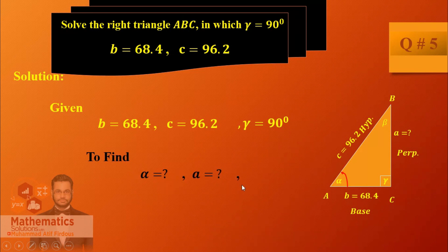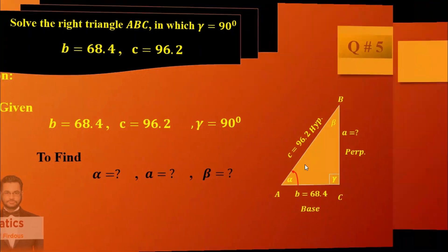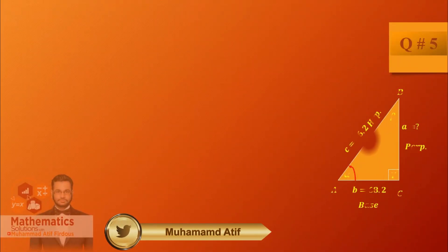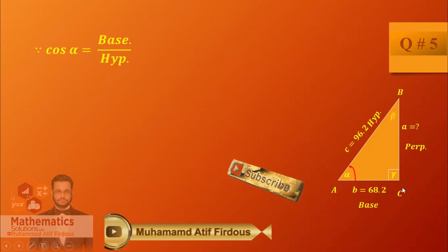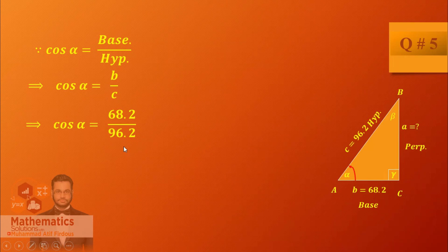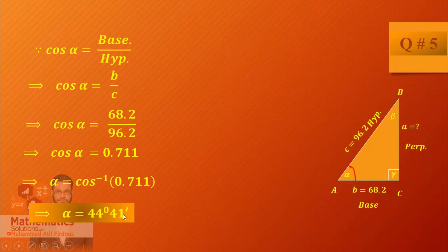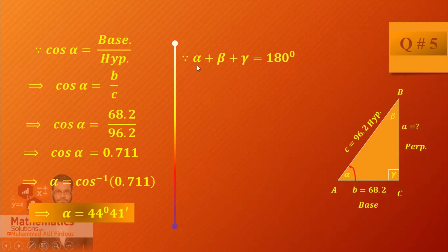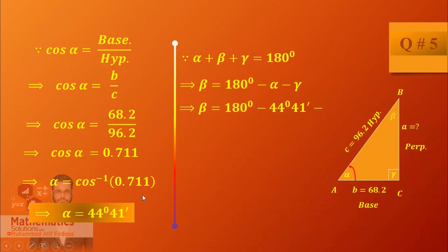We can find beta. We have alpha, A, and B. Now for the last question: use cosine which equals base over hypotenuse. Base is B equals 68.2 and hypotenuse is C equals 96.2. So cosine beta equals 68.2 over 96.2. Take cosine inverse to get beta equals 44 degrees 41 minutes. For the third angle, use alpha plus beta plus gamma equals 180, giving the remaining angle as 45 degrees.